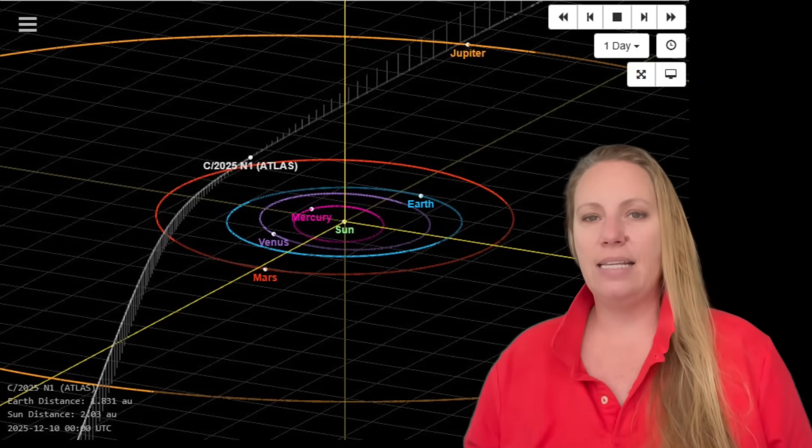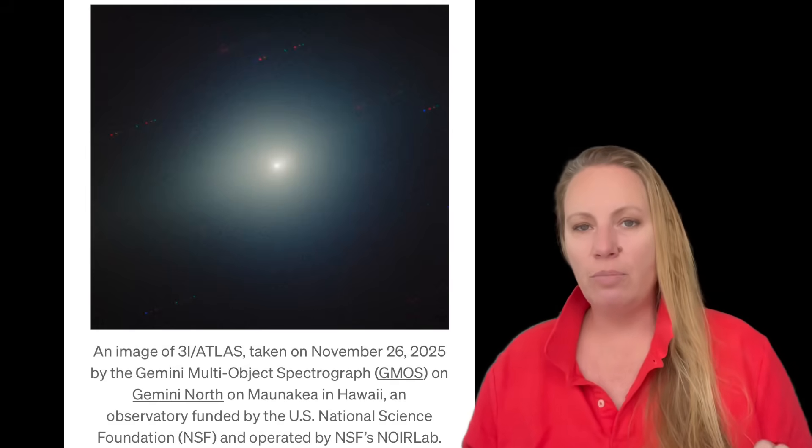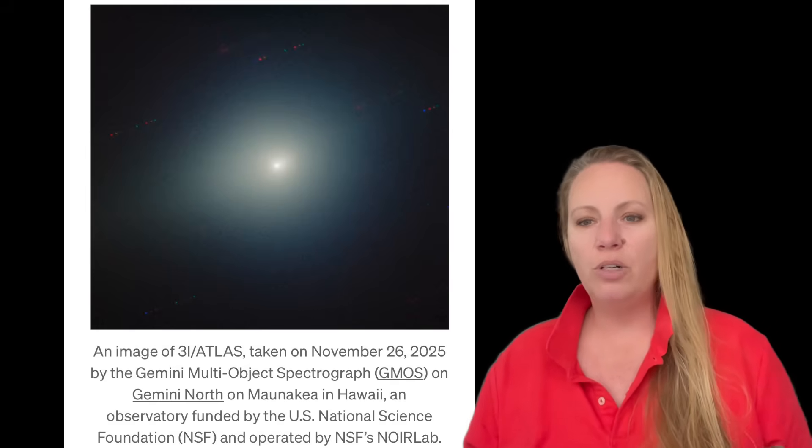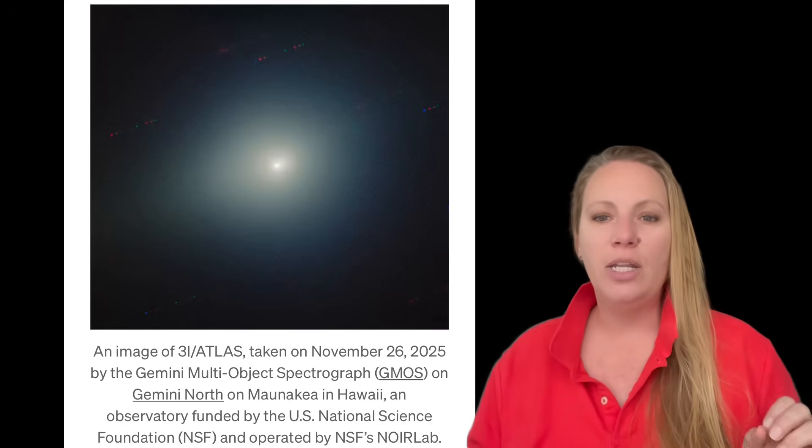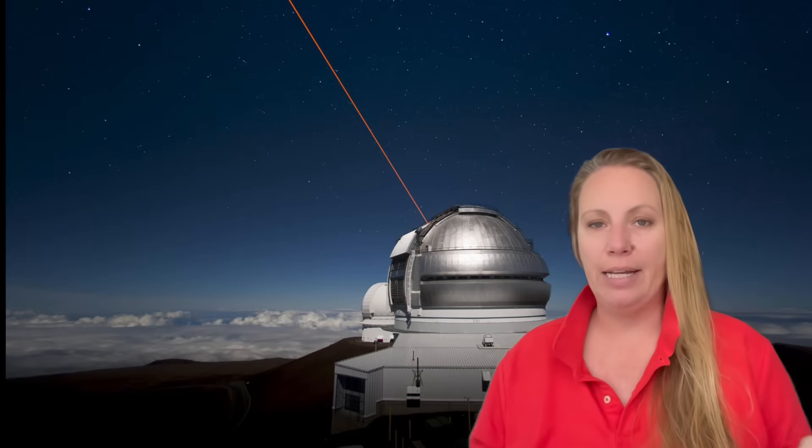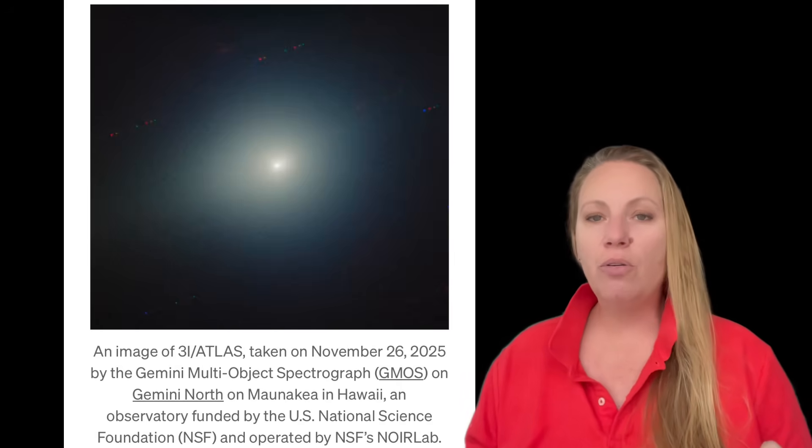Look at this Gemini image taken on November 26, 2025, when astronomers took a new image of 3i Atlas using the very powerful Gemini North telescope. This is important because we can compare it to something else. Gemini North has a mirror that is 8.1 meters wide, about 26.5 feet.